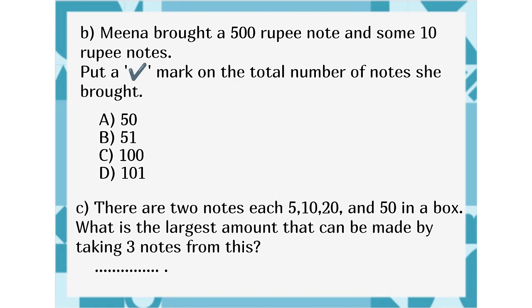C. There are 2 notes each of 5, 10, 20 and 50 in a box. What is the largest amount that can be made by taking 3 notes from this?